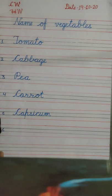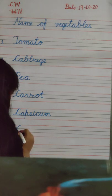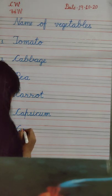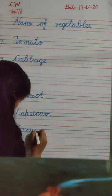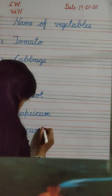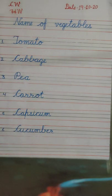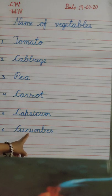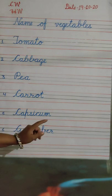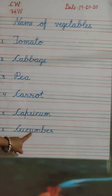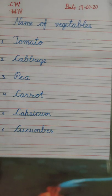Next, number 6. C, U, C, U, M, B, E, R. Cucumber. C, U, C, U, M, B, E, R. Cucumber. Okay?